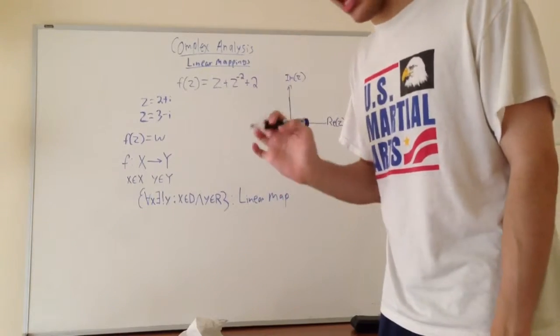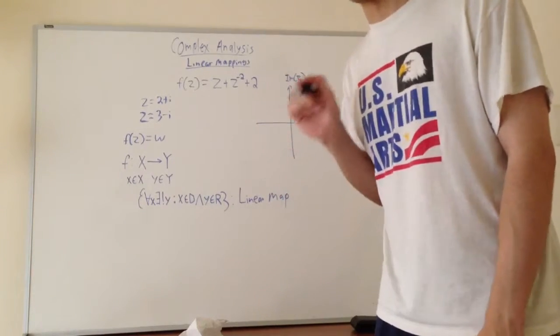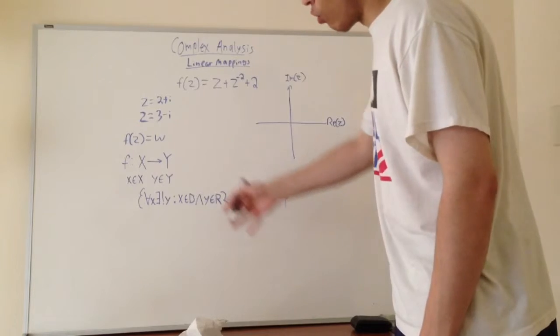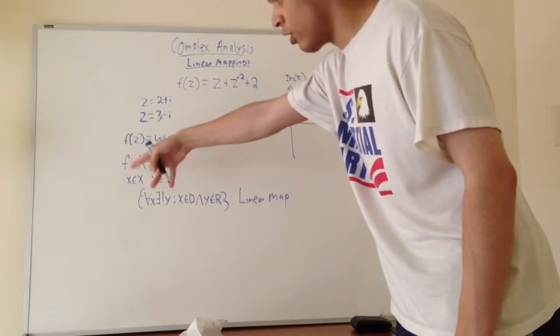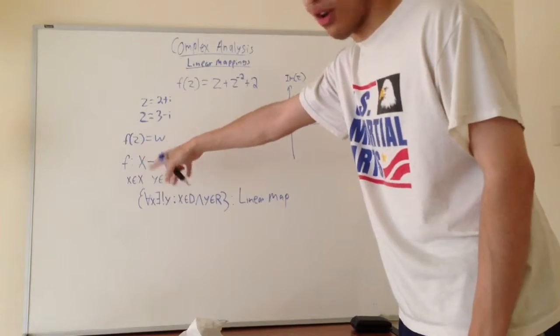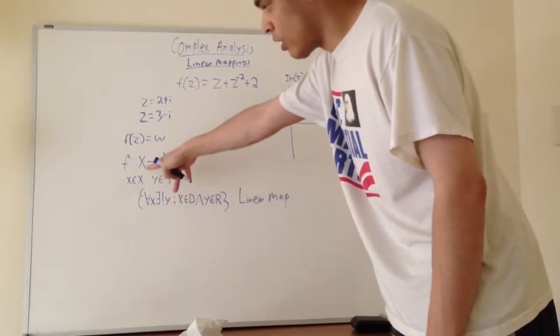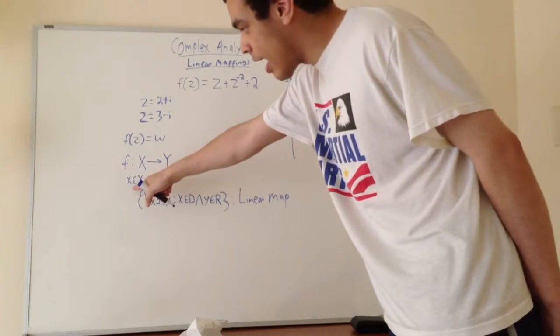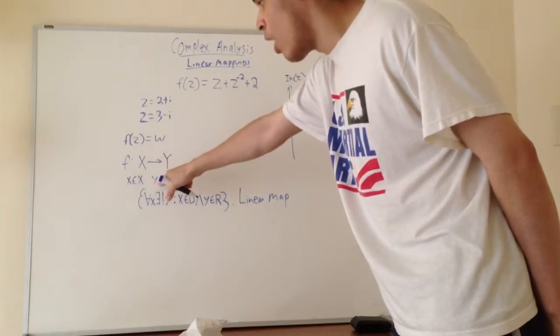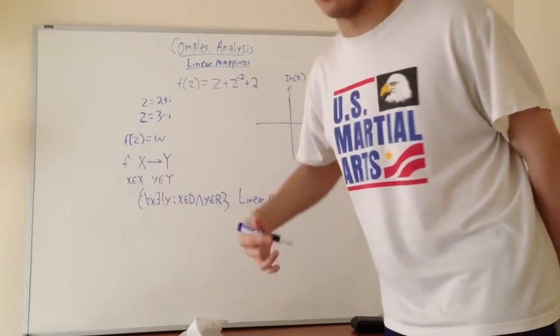Basically, you take one element in the domain and map it to exactly one element in the co-domain. More formally, this can be written out. Let's say f is a complex function defined on C, which is the complex set, and we have a domain x mapping to range y. Let x be a member of the domain, and let y be a member of the co-domain or range.